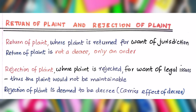The last topic of the video is return of plaint and rejection of plaint. While reading the section on decree, we came across the word 'rejection of plaint.' These two concepts look similar in nature but are different. Return of plaint happens where a plaint is returned for want of jurisdiction — it is not a decree, only an order. Rejection of plaint happens where a plaint is rejected for want of legal issues, meaning the plaint would not be maintainable. Therefore, rejection of plaint is deemed to be a decree — that is, it carries the effect of a decree.